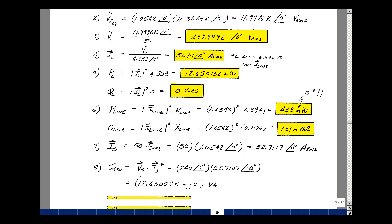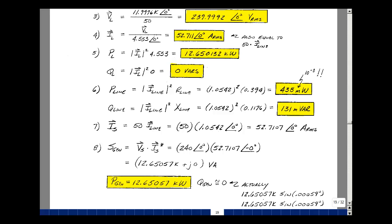So now the power generated by the source is the voltage times the current conjugate. That's the current coming out of it, which was the 52.7107 at an angle of zero. So we're going to change the sign of that to minus zero and multiply that by the 240 at angle zero.